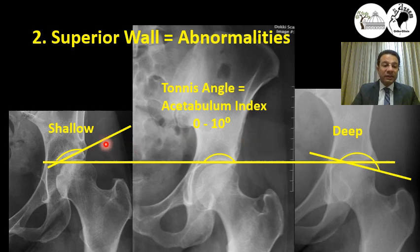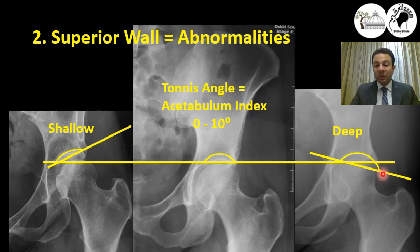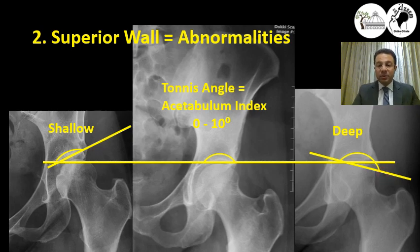If you have more than 10 degrees, that's an acetabular index showing a shallow acetabulum, or acetabular dysplasia. If you have a deep socket, you will have a negative acetabular index, and this corresponds to what we name a pincer effect of femoroacetabular impingement.